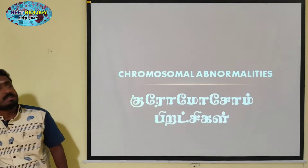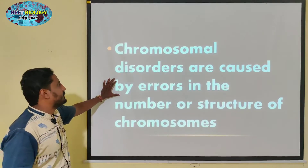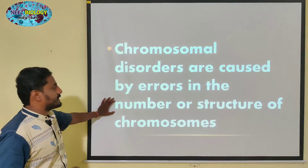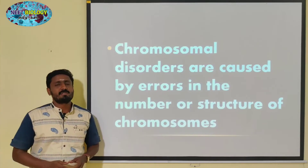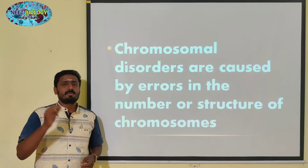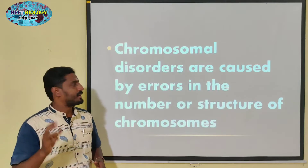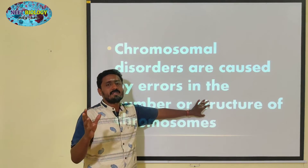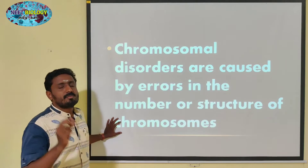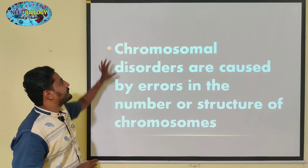Chromosomal Disorders are caused by errors in the number or structure of Chromosomes. There are chromosomal structural operations, which is called Ploidy, and chromosomal numerical changes. Chromosome Abnormalities are caused by errors in the number of Chromosomes.